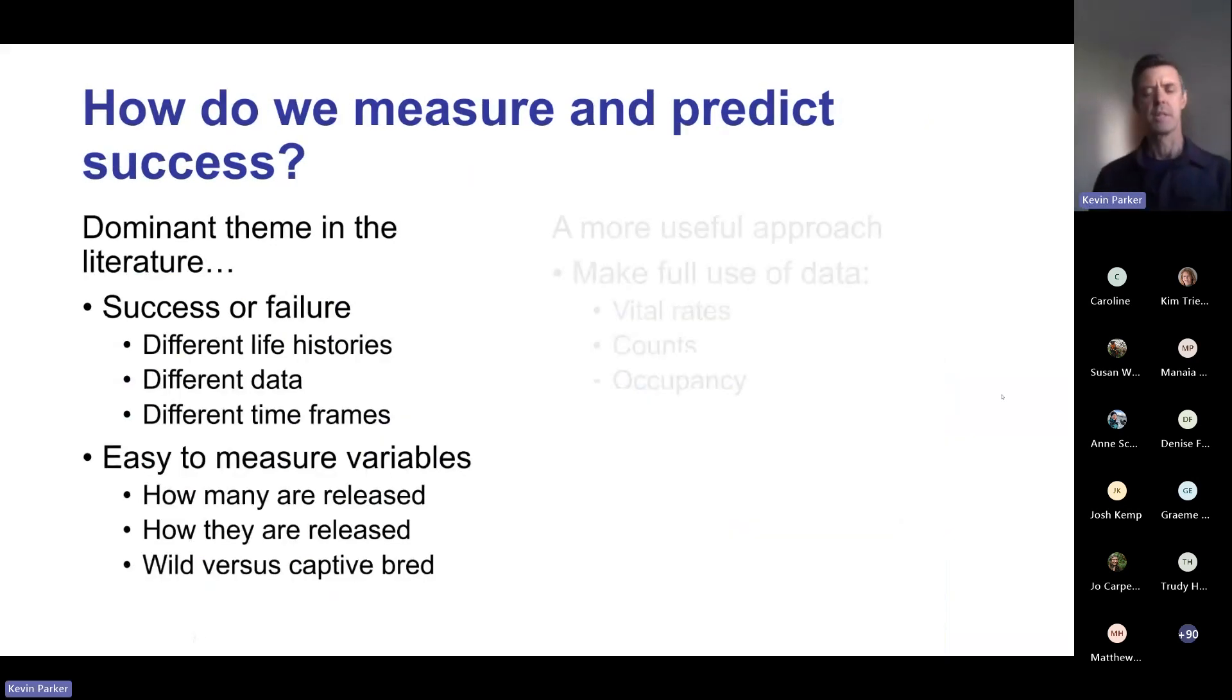Given the low success rates, a really important question is: how do we measure and predict success? The dominant theme in the literature has been to conduct meta-analyses which look at binary outcomes - success or failure. But the problem is these meta-analyses have typically compared groups of animals with very different life histories, using quite different datasets collected over very different time frames.